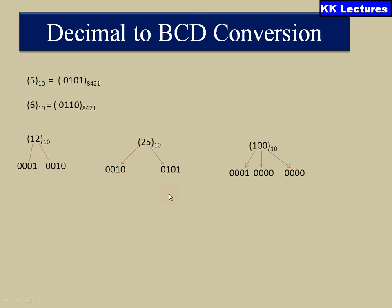The advantage here is that whenever you want to convert a decimal number to binary it takes more time, whereas converting a decimal number to BCD is very easy.